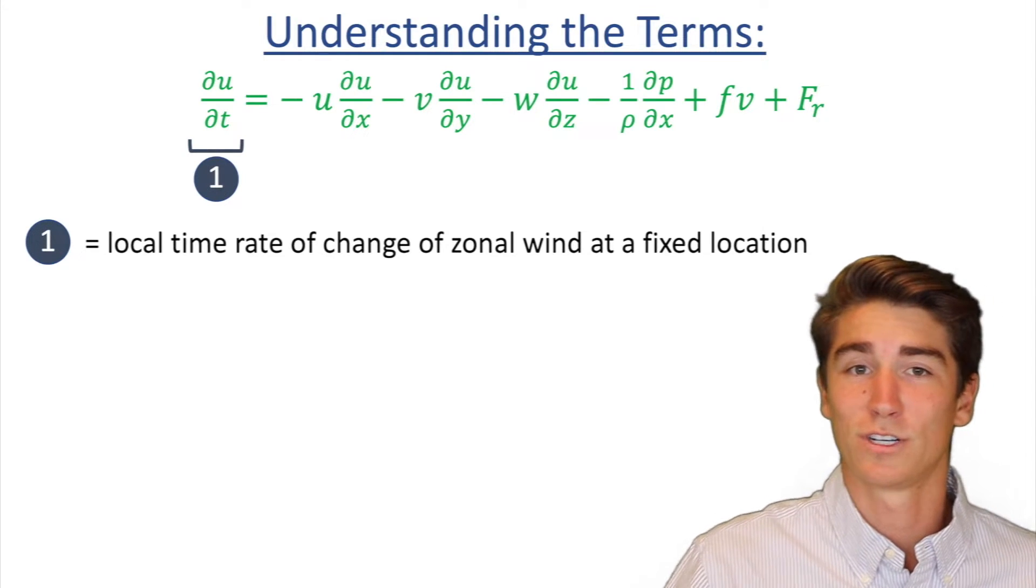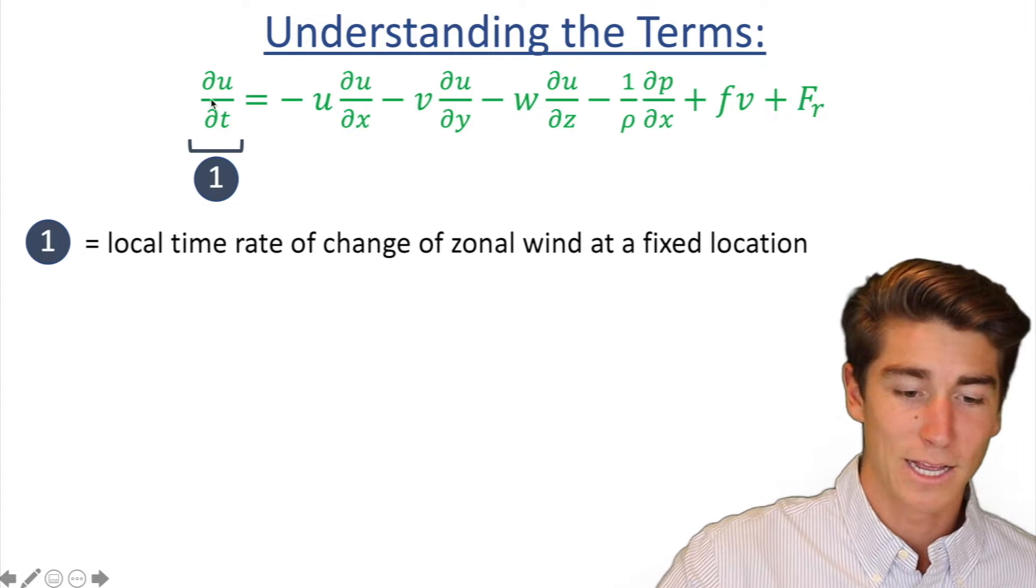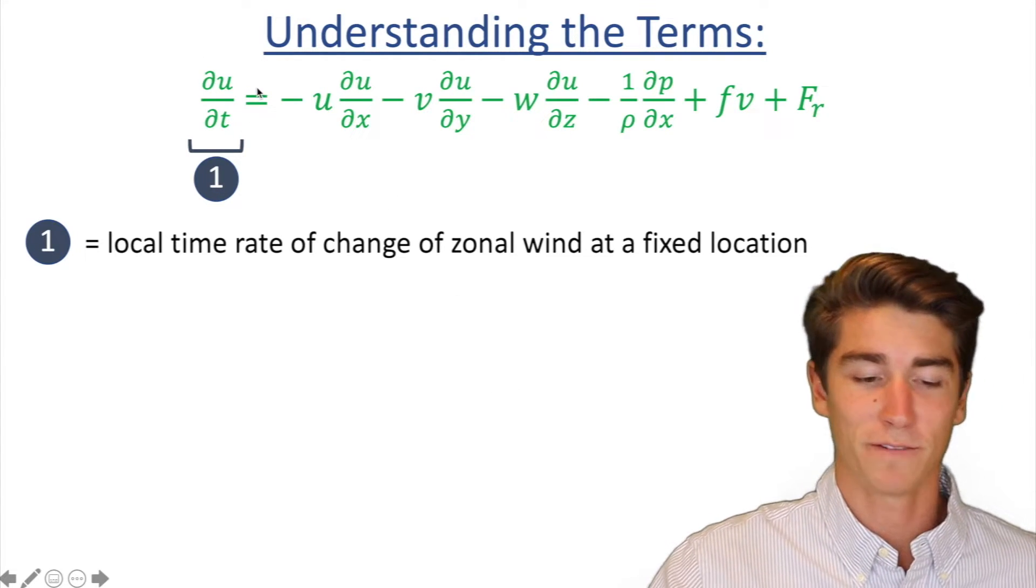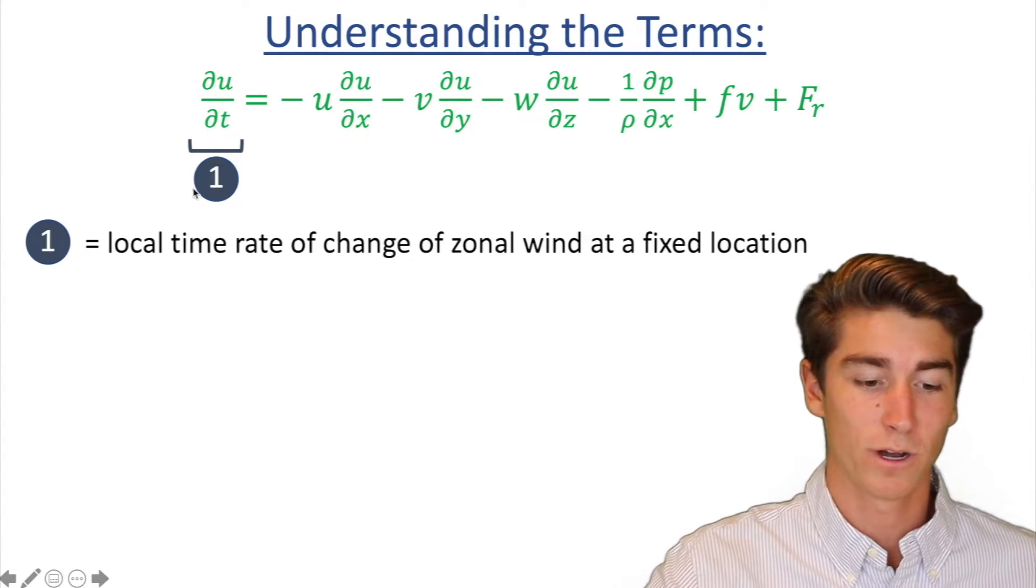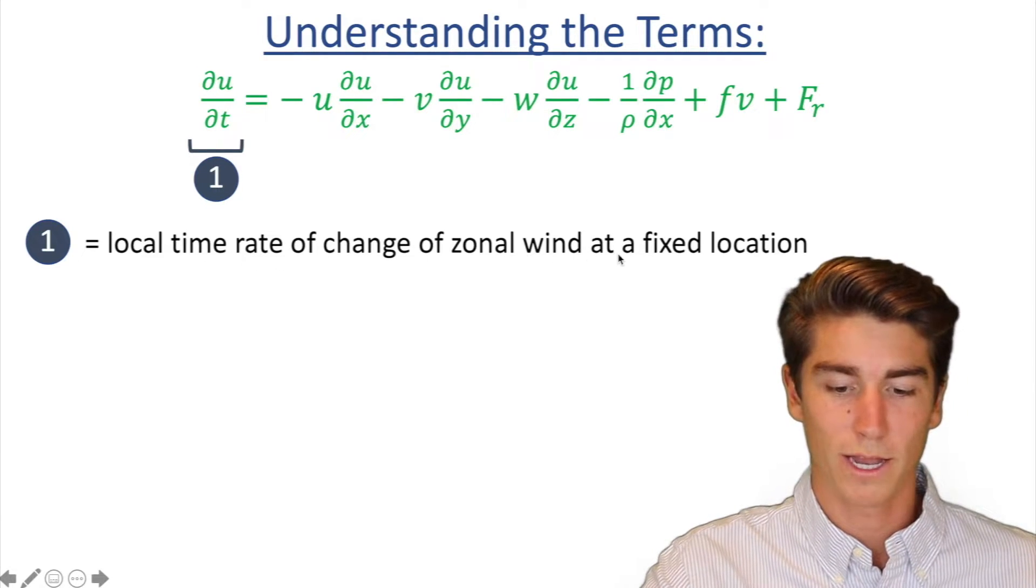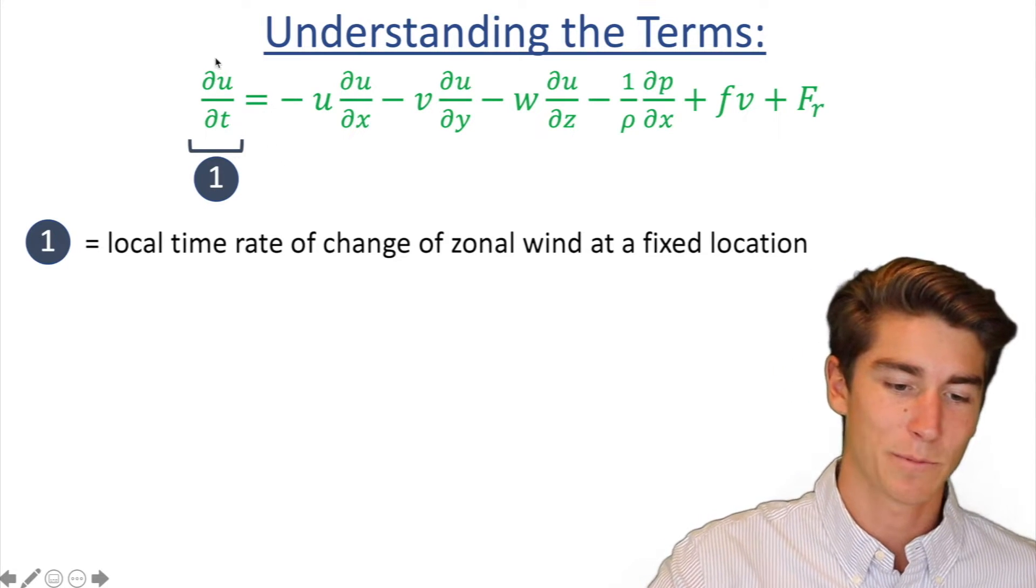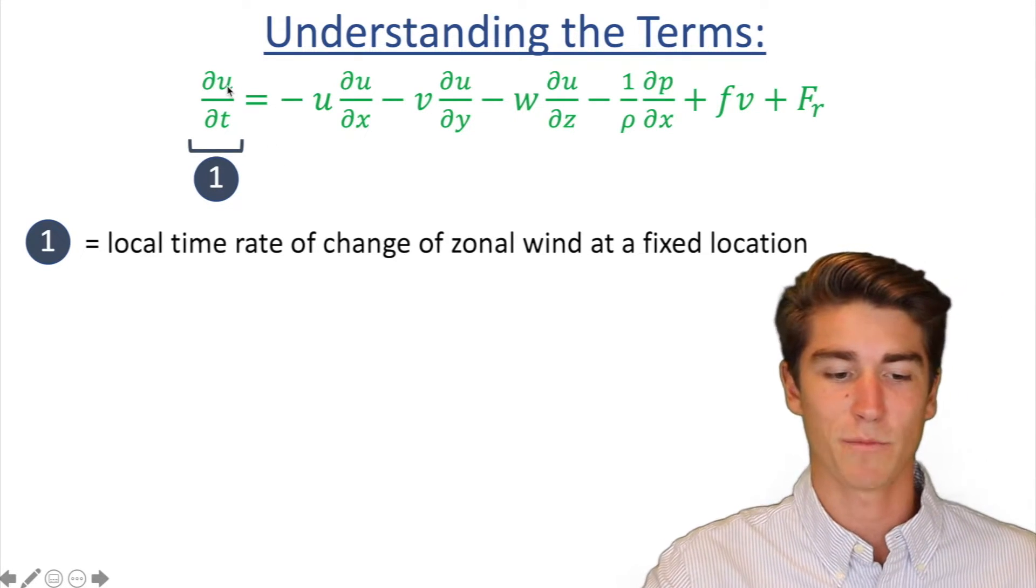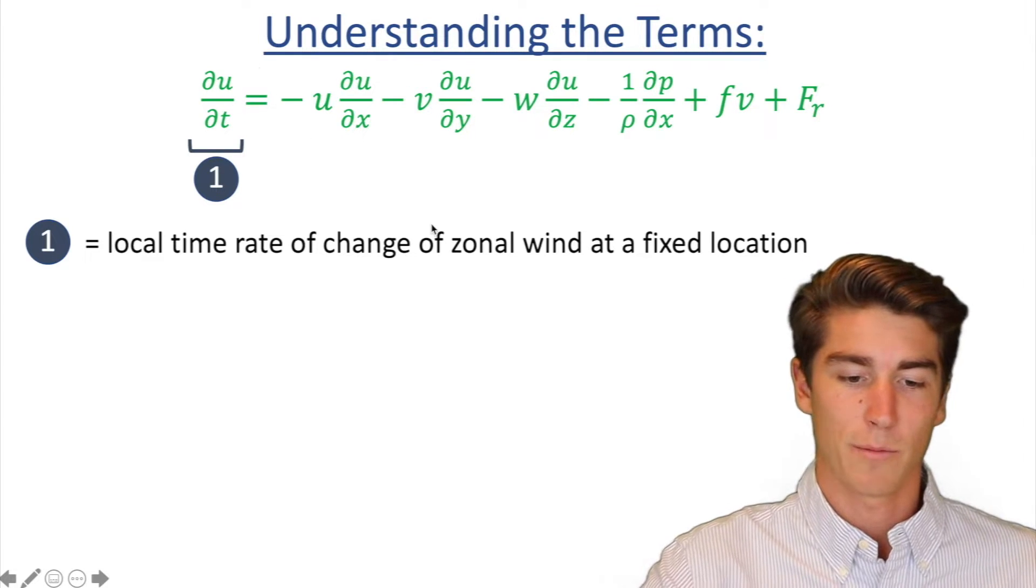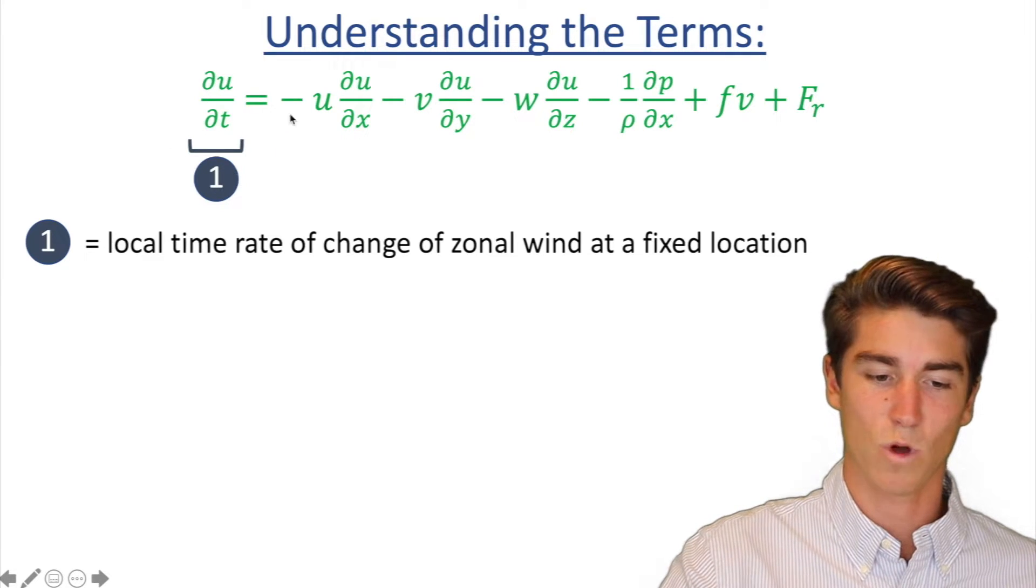So we've understood hopefully the symbols. Now we're going to look at some of the terms. So this term out on the left hand side, which is what we're solving for, is the local time rate of change of zonal wind at a fixed location. Notice that it's the zonal wind, and that's because right now it's a u. Sometimes you might see that it would also be a v. But for right now, we're just looking at the zonal wind at a fixed location. That is term one.